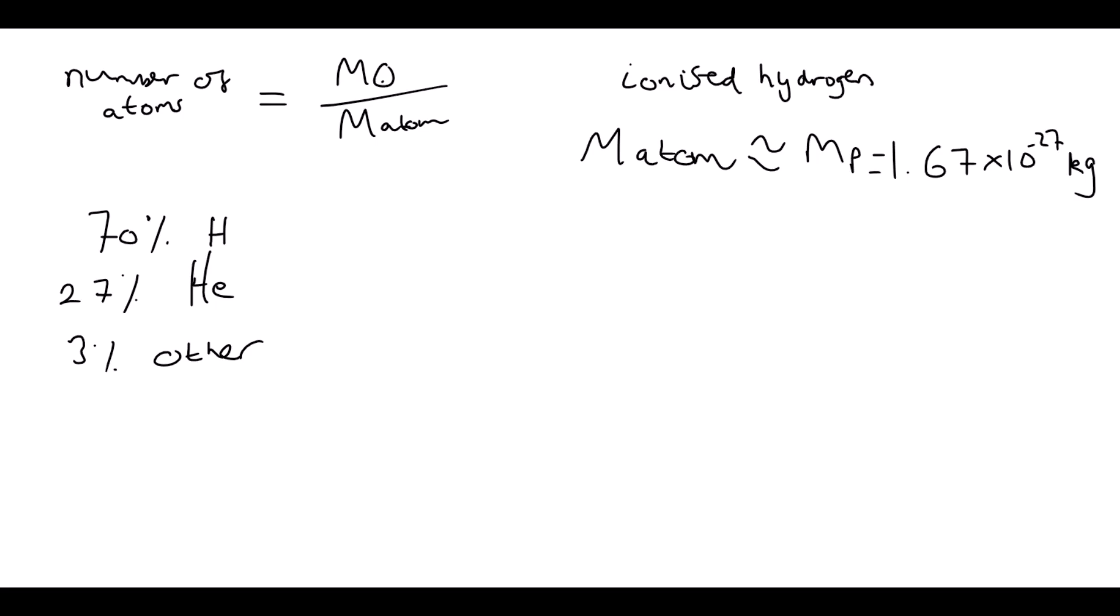Doing so finds the proton mass to be 1.67 times 10 to the minus 27 kilograms to three significant figures. That's 0.000 26 zeros, 167 kilograms. So absolutely tiny.